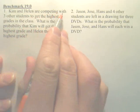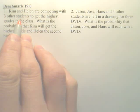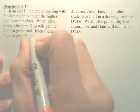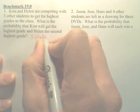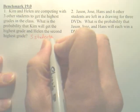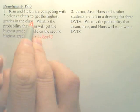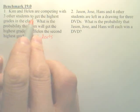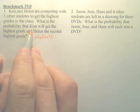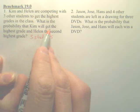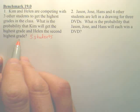Kim and Helen compete with three other students — so there are five students total. Be careful about that. To get the highest grade in the class, what is the probability that Kim will get the highest grade and Helen will get the second highest grade?